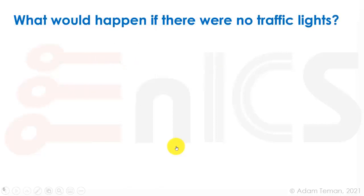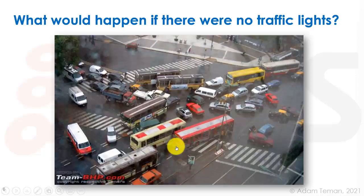So the basic answer to the motivation of why we need sequential circuits or why we need to use synchronous methods to design our circuits is the question of what would happen if there were no traffic lights. And I found a cool picture on the web that kind of explains it all.